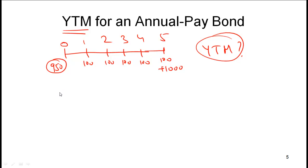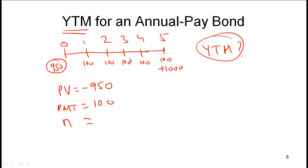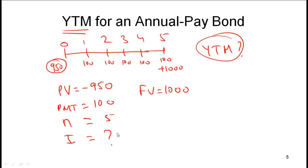On your calculator you can do this as follows: put in present value equal to minus 950, the payment equal to 100, the number of periods N equal to 5, the future value equal to 1000, and compute the interest rate. Remember that the present value is negative because that's money out, and the payments and future value are positive because that's money in. When you plug this in and compute the interest rate you should get 11.37%.